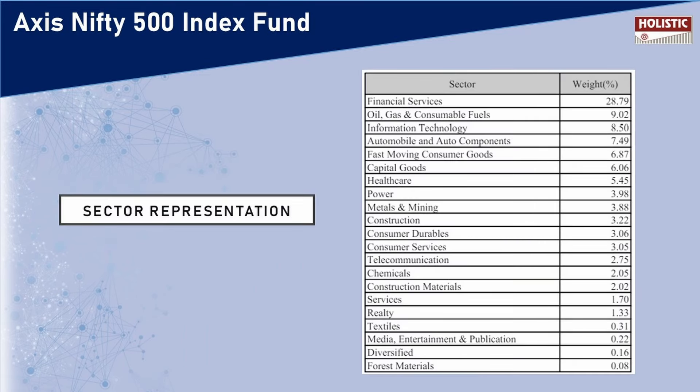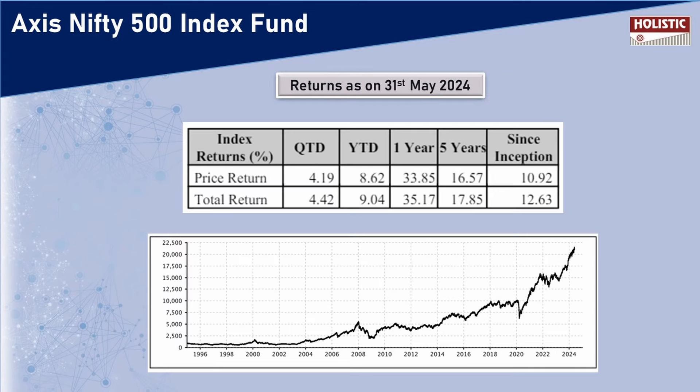The sectors represented under the Nifty 500 Index include: financial services, oil gas and consumable fuels, information technology, automobile and auto components, fast moving consumer goods, capital goods, healthcare, power, metals and mining, construction, consumer durables, consumer services, telecommunication, chemicals, construction materials, services, realty, textiles, media entertainment and publication, diversified, and forest materials. The highest weight is given to financial services at 28.79%, and the lowest to forest materials at 0.08%.